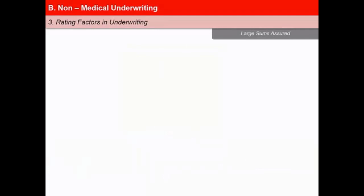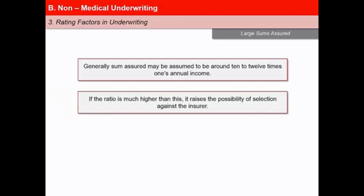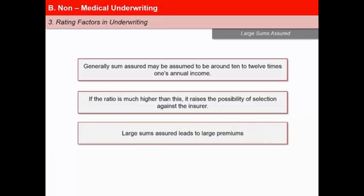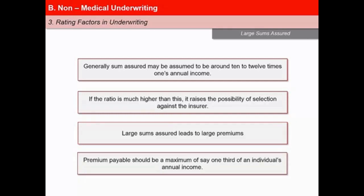An underwriter needs to be aware of cases where the amount of insurance is very large relative to the annual income of the proposed insured. Generally, sum insured may be assumed to be around 10 to 12 times one's annual income. If the ratio is much higher, it raises the possibility of selection against the insurer. Large sums assured imply large premiums and raise the question about continuation of premium payments. It would be prudent to limit insurance so that the premium payable is a maximum of one-third of an individual's annual income.